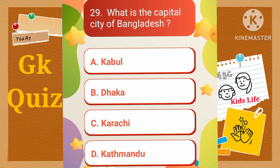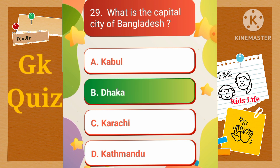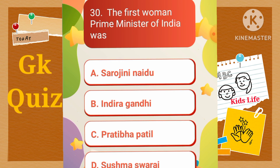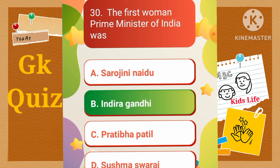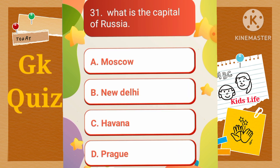What is the capital city of Bangladesh? A) Kabul, B) Dhaka, C) Karachi, D) Kathmandu. The first woman Prime Minister of India was: A) Sarojini Naidu, B) Indira Gandhi, C) Pratibha Patil, D) Sushma Swaraj. What is the capital city of India?